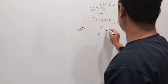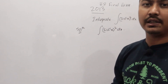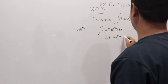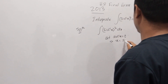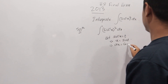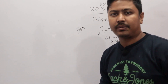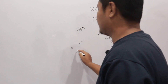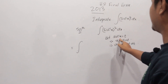So the given integral is: integration of (sin⁻¹x)² into dx. To solve this problem, we use the substitution method. Let sine inverse x equal to t. Then dx equals cos(t) dt. So we use this substitution.